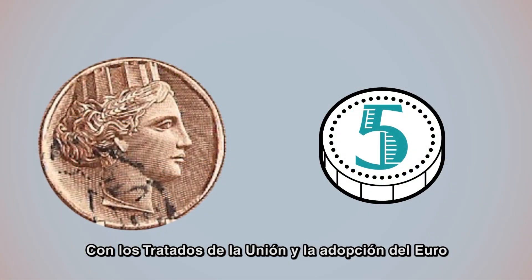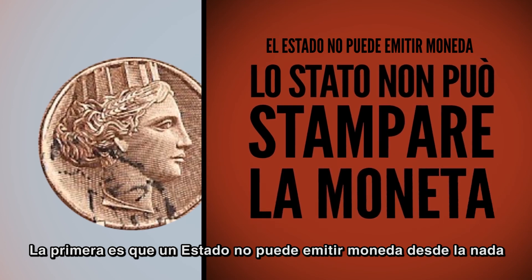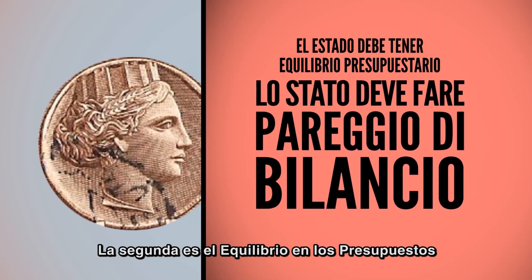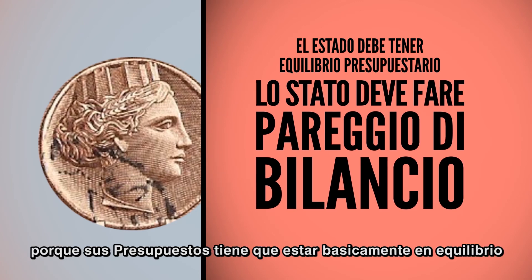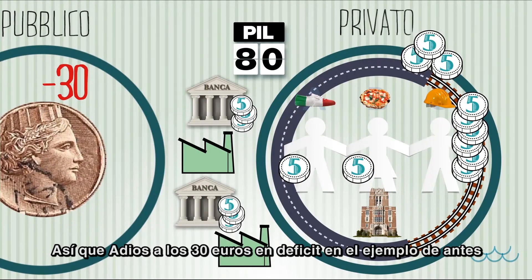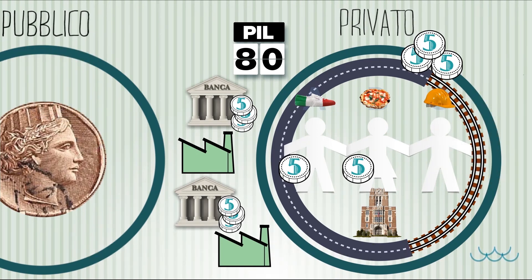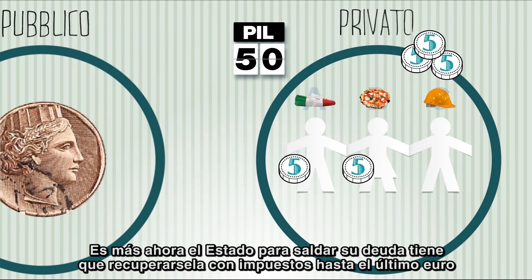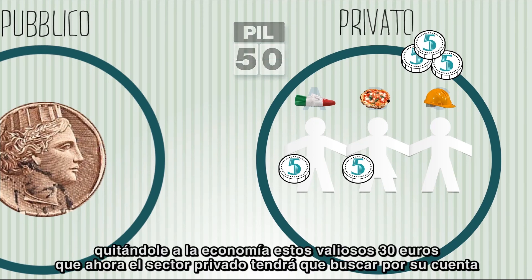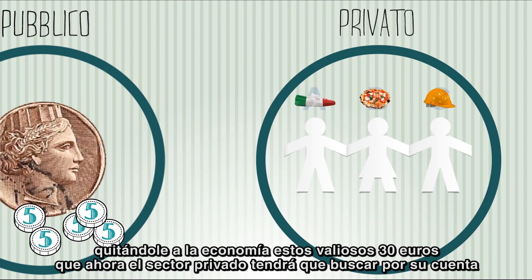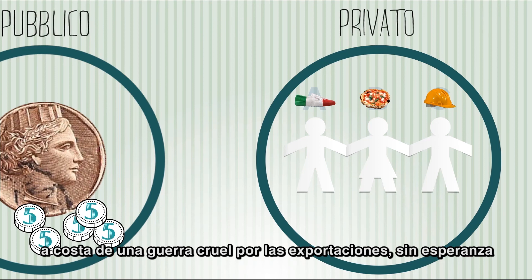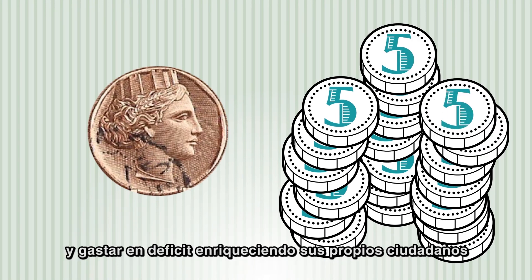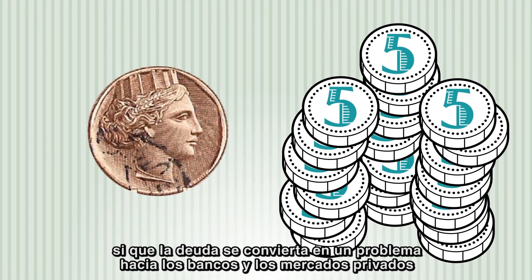Con i trattati europei e l'adozione dell'euro vengono introdotte due norme molto severe. La prima è che lo Stato non può stampare moneta dal nulla come è avvenuto per centinaia di anni. La seconda è il pareggio di bilancio, che impedisce allo Stato di finanziare la spesa pubblica perché il suo bilancio deve essere sostanzialmente in pari. Quindi addio ai 30 euro di deficit dell'esempio di prima. Addio a strade, porti, ferrovie, scuole. Anzi, ora lo Stato per appianare quel debito se lo deve riprendere con le tasse fino all'ultimo euro, sottraendo all'economia quei 30 preziosi euro che d'ora in avanti il settore privato dovrà trovare da solo a prezzo di una dura guerra per l'export senza speranza. Ecco dunque che la moneta sovrana consente di ripagare sempre il debito e di spendere a deficit arricchendo i propri cittadini senza che il debito diventi un problema verso le banche e i mercati privati.